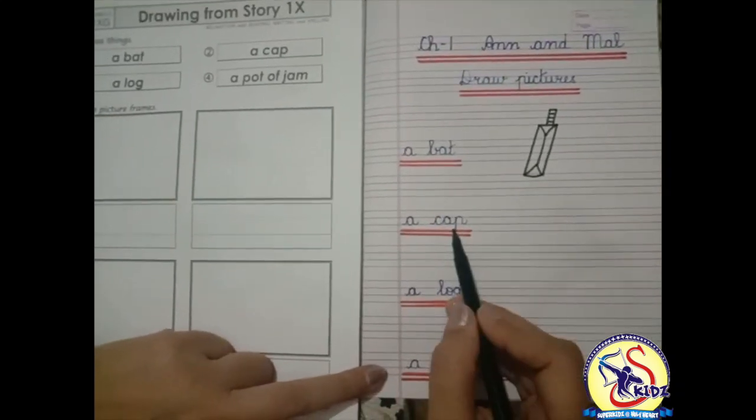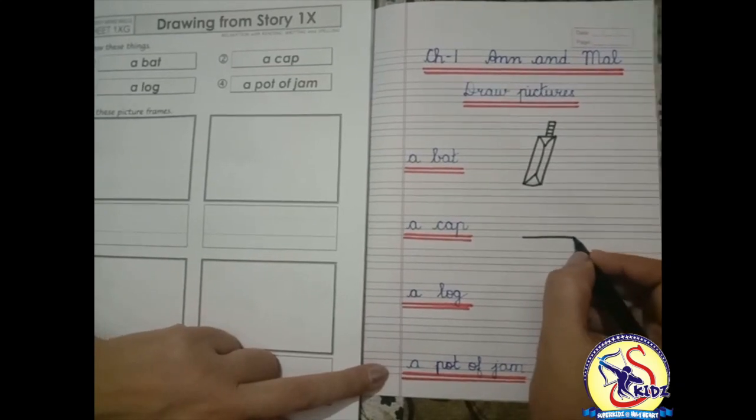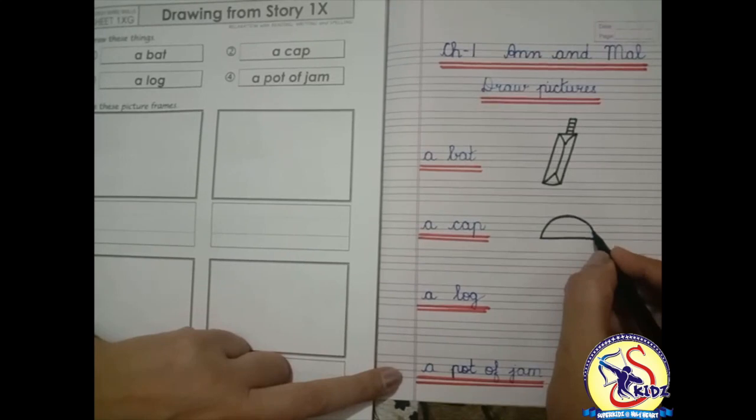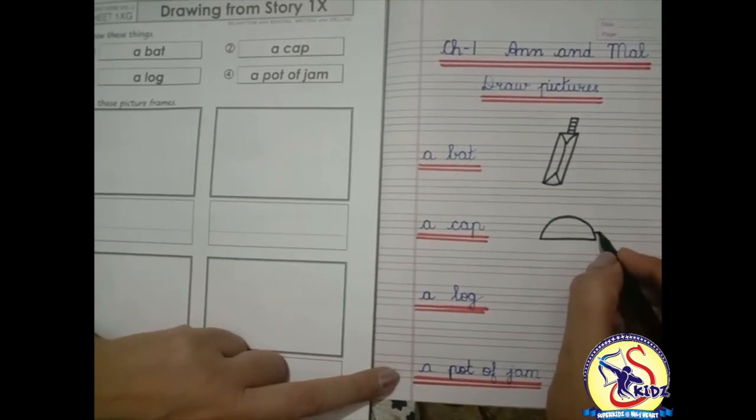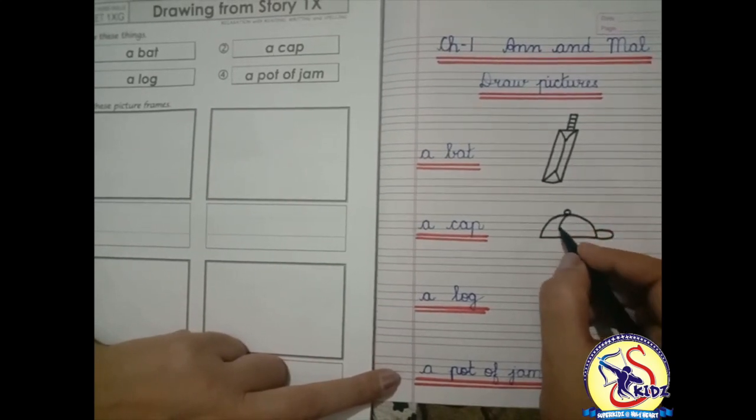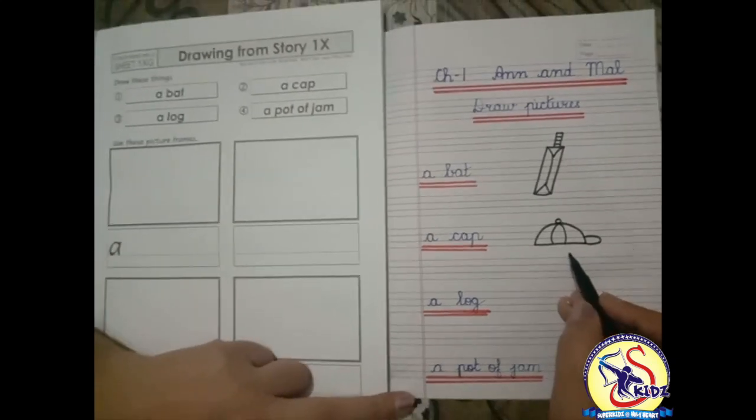Now we are going to draw the picture of a cap. One sleeping line, make a semicircle, a curve. This is the picture of a cap.